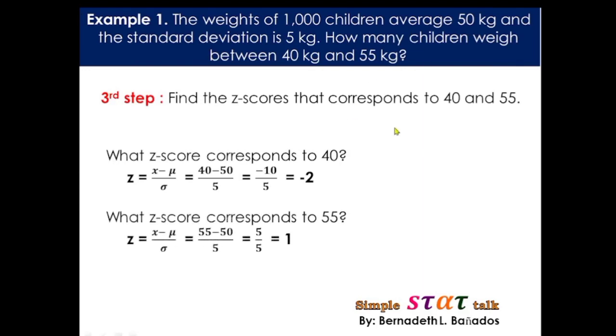We are looking for the corresponding value of 40. What is the z-score for 40? That is why we will be using this formula. Z is equal to x minus μ divided by σ. X, yan yung raw data. So, ang unang gagamitin natin ay 40. So, 40 minus the mean. Ang mean natin ay average of 50 kg. And then, our standard deviation is 5. So, 40 minus 50, that is negative 10, divided by 5, that is negative 2. So, based on the graph that I have shown earlier, 40 is under z-score negative 2. So, the formula is right.